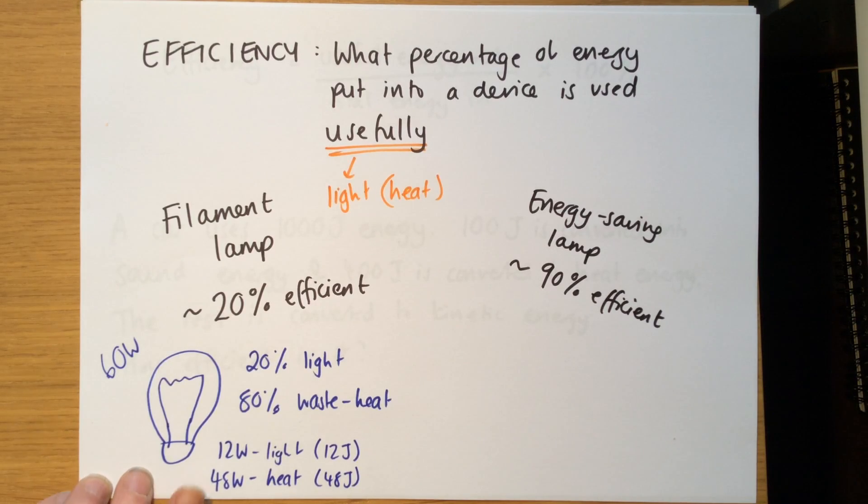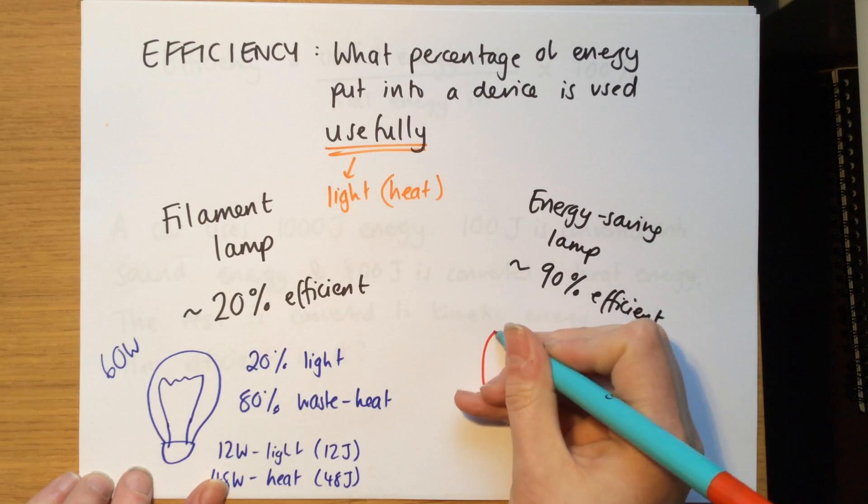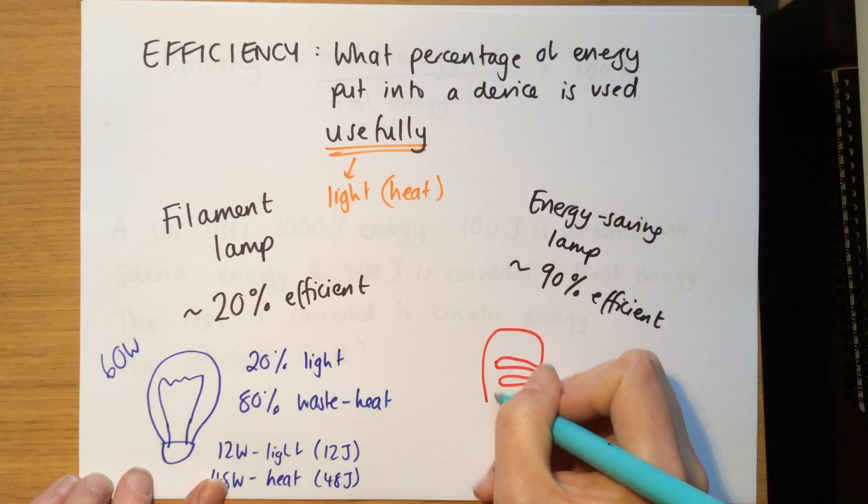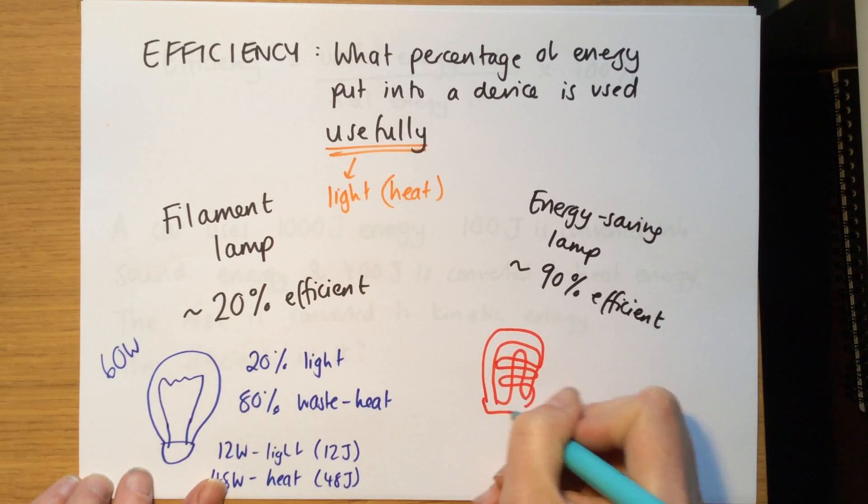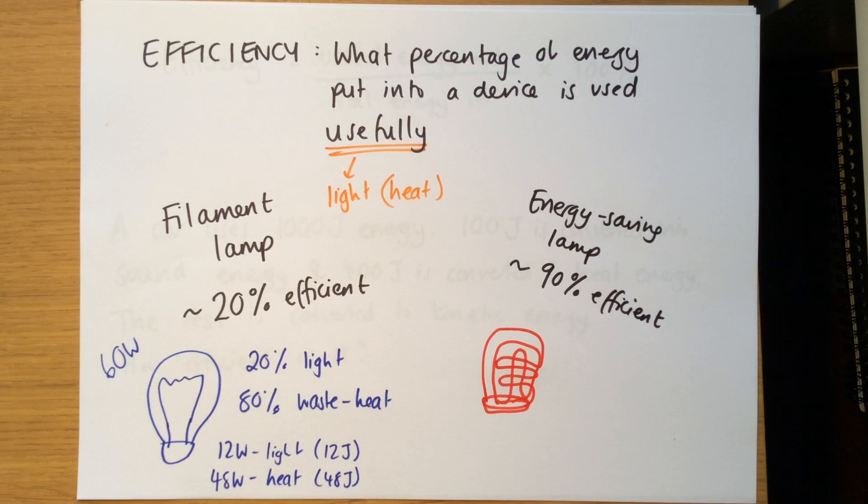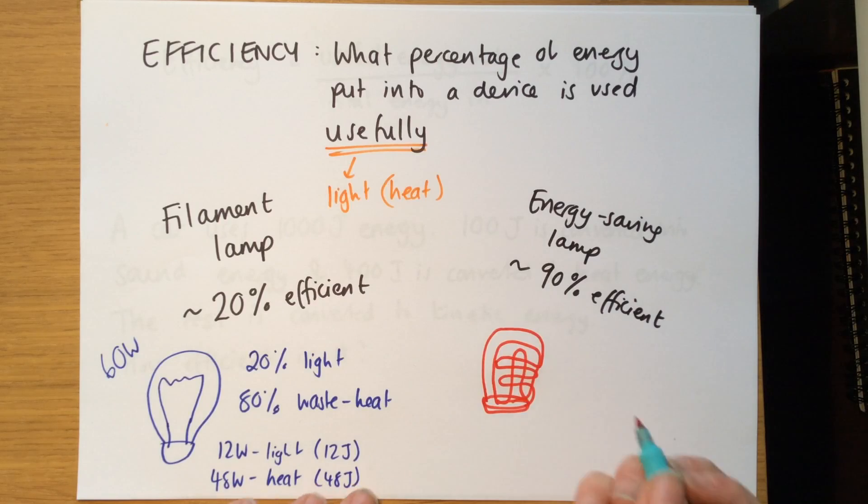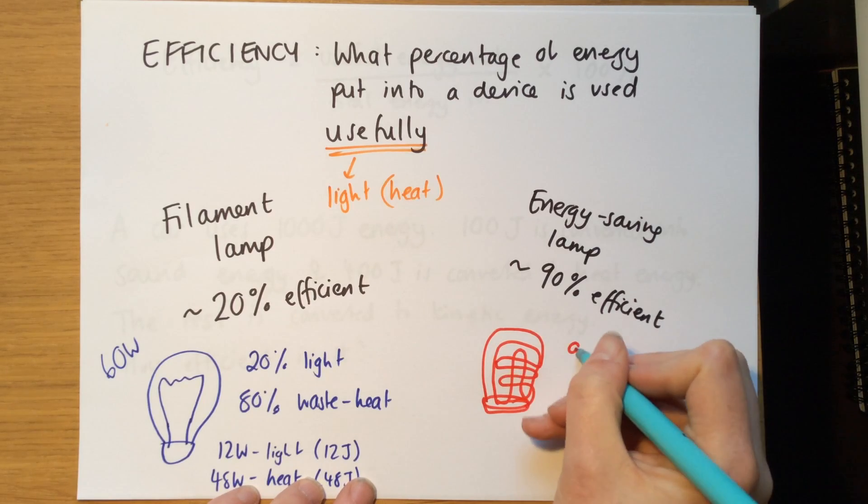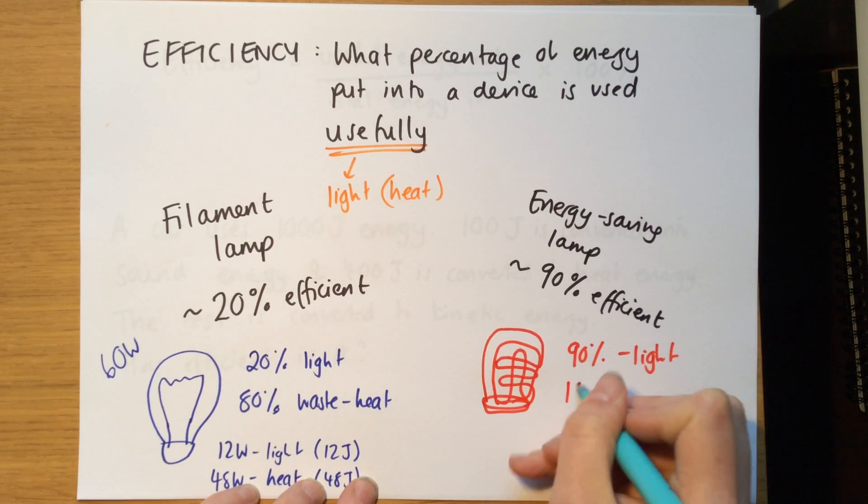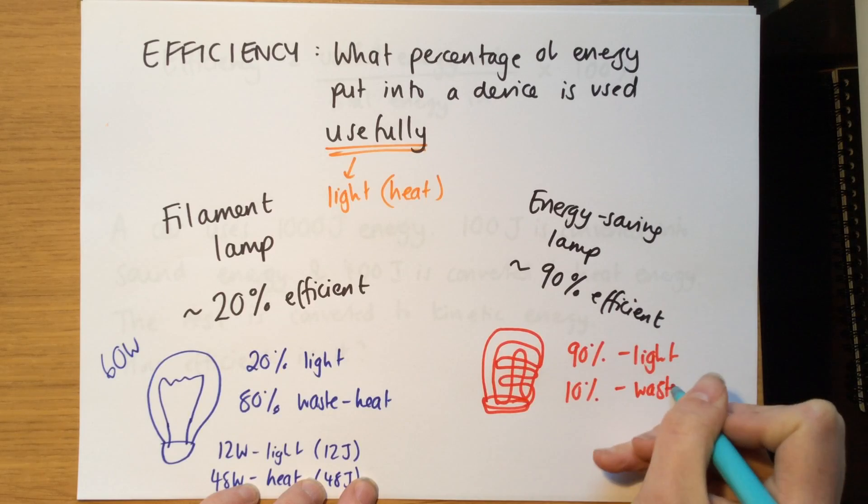Now energy efficient light bulbs, those ones that are usually, I can't even draw one, but they're made of tubes that look really funny and weird. It's got tubes of gas in, that's meant to be my example there. Now they're 90% efficient, this is why they're energy saving lights, because they use less energy, they don't waste as much. Now 90% efficient means that 90% of their energy that goes in comes out as light, and only 10% comes out as wasted heat.